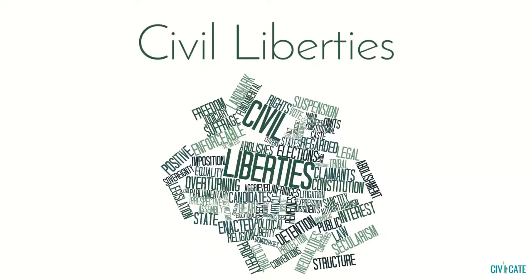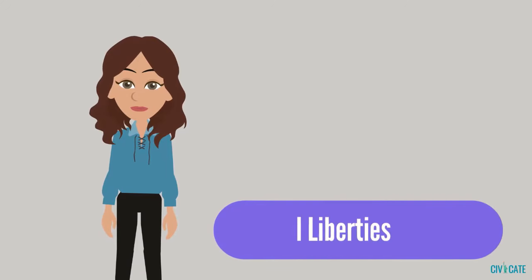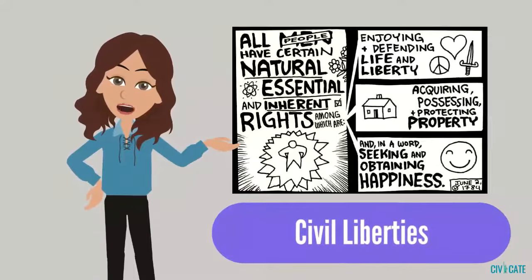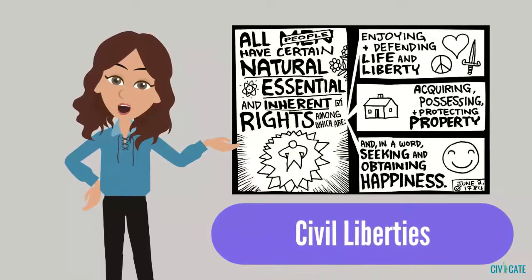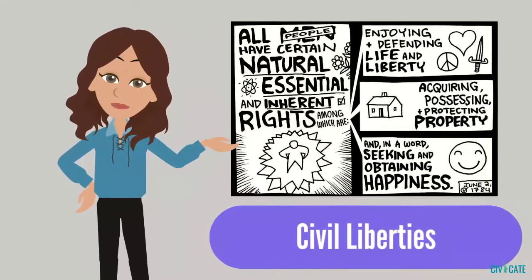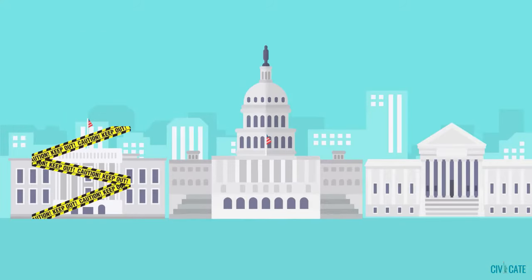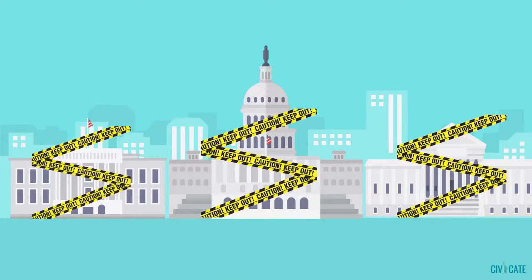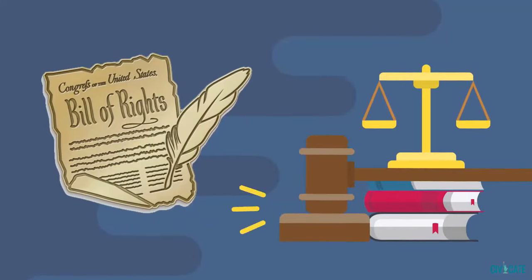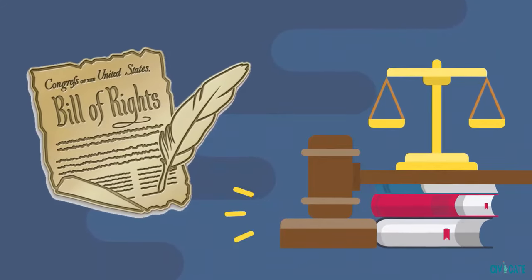Let's start by talking about civil liberties. Civil liberties are freedoms that people have as part of their natural rights to life, liberty, and the pursuit of happiness. Because the government cannot take away those rights, civil liberties limit the power of the government. Civil liberties are listed and described specifically in the Bill of Rights.